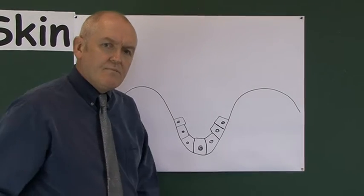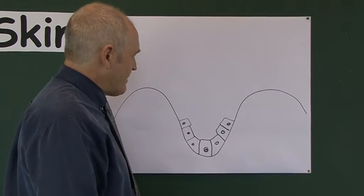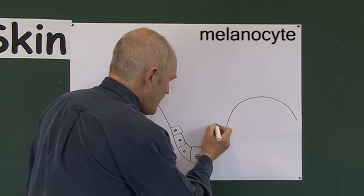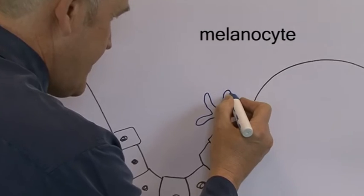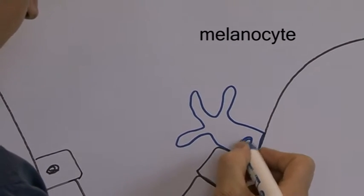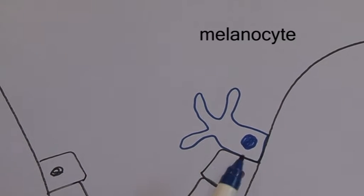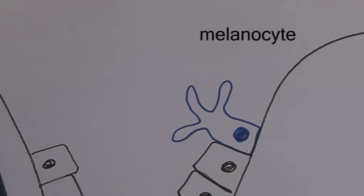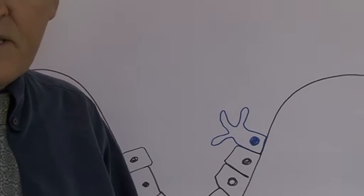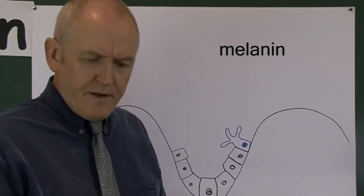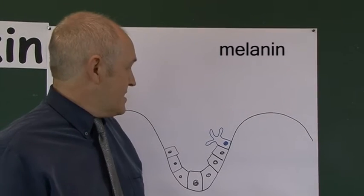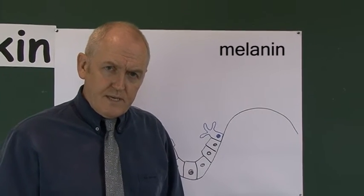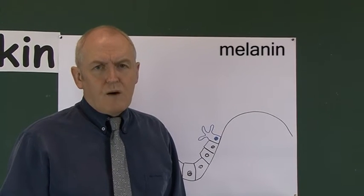There are other cells in the stratum basale as well. There's another type of cell called a melanocyte. Melanocytes have wavy, dendritic arms and they produce melanin. What color you are is determined by the melanin in your skin — if you're fair-skinned, your melanocytes produce little melanin unless exposed to sun, in which case they start producing more melanin.